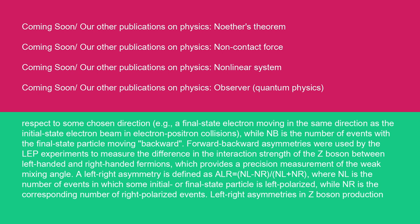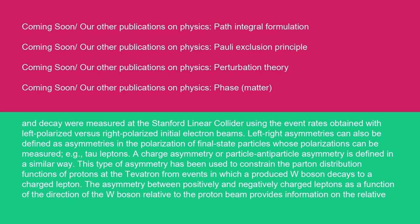A left-right asymmetry is defined as A_LR = (N_L - N_R)/(N_L + N_R), where N_L is the number of events in which some initial or final state particle is left-polarized, while N_R is the corresponding number of right-polarized events. Left-right asymmetries in Z-boson production and decay were measured at the Stanford Linear Collider using the event rates obtained with left-polarized versus right-polarized initial electron beams. Left-right asymmetries can also be defined as asymmetries in the polarization of final state particles whose polarizations can be measured, e.g., tau leptons.